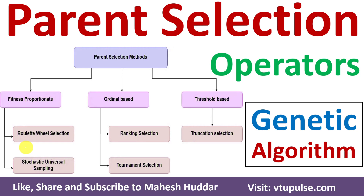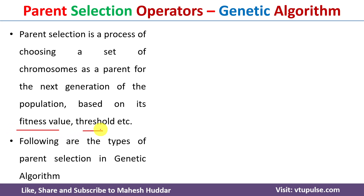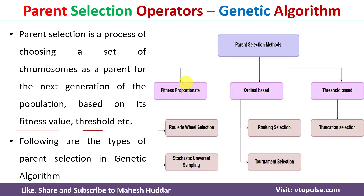Welcome back. In this video I will discuss what are the different selection operators present in genetic algorithm with the help of simple examples. Parent selection is a process of choosing a set of chromosomes as parents for generating the next population, based on different possibilities like fitness value threshold and so on. The parent selection operators have been divided into mainly three groups: fitness-based selection techniques, ordinal-based selection techniques, and threshold-based selection techniques.